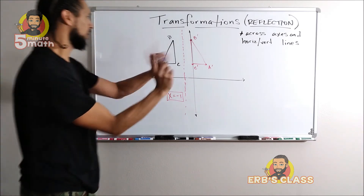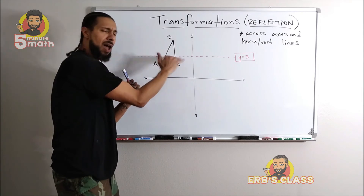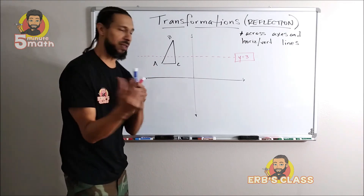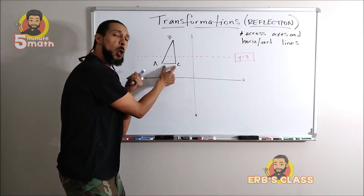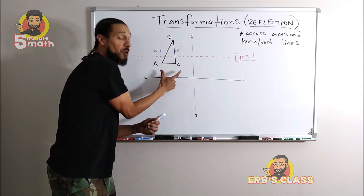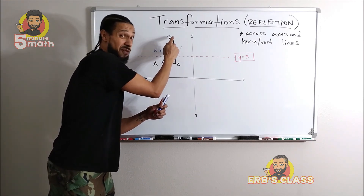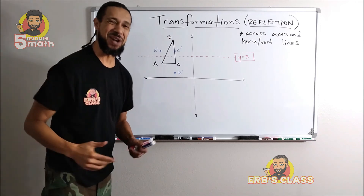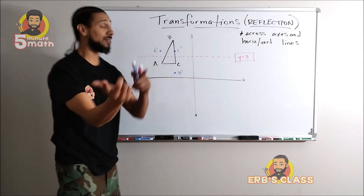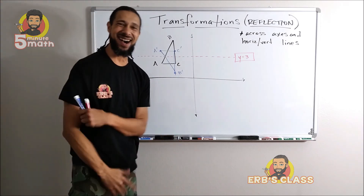Now let me show you one more thing — the horizontal line with the equation y equals three. Notice my mirror line is actually going through my original shape, but we can still reflect it. The two points that started below the mirror will end up above it, and the point that started above the mirror will end up below it. When your mirror goes through your shape, the reflection is going to overlap and look like this — it's still a valid reflection of the original.